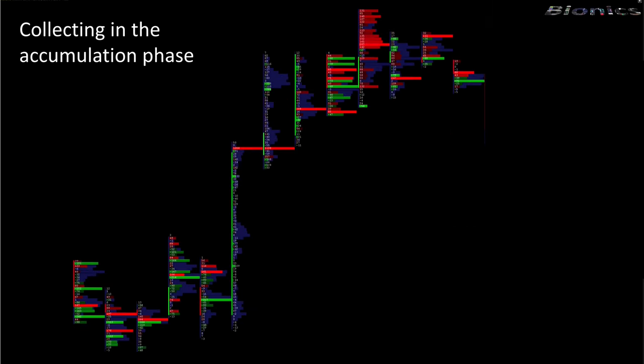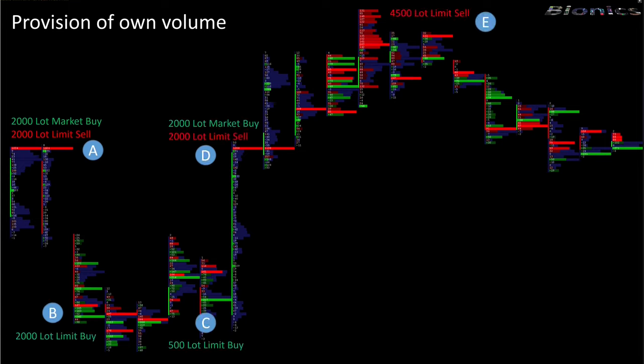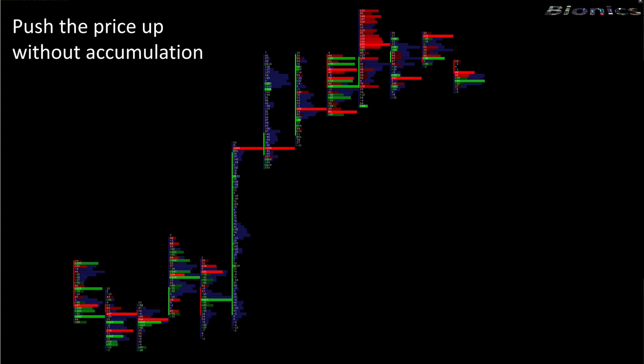But there are special filter sequences that can be used to make these patterns visible. The big players don't have many opportunities to realize their profit. As a rule, you collect within an equilibrium, push the price upwards, and get out in the ongoing movement upwards. If there is not enough volume in the market, you are able to make volume available to yourself in order to achieve your goals more quickly.